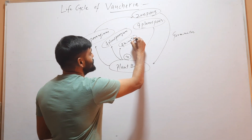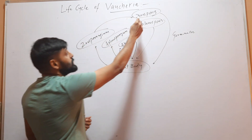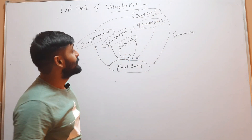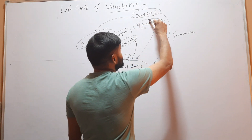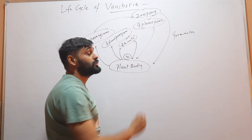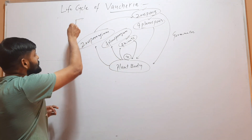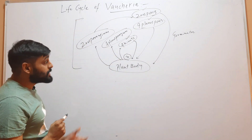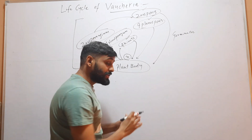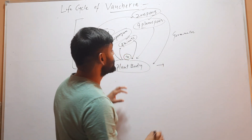The third type of asexual reproduction occurs through akinete formation. These akinetes are thick-walled resting spores formed under unfavorable conditions. Upon return of favorable conditions they germinate and form the plant body. To summarize: zoospores are formed in aquatic species, aplanospores in terrestrial species, and akinetes are formed during unfavorable conditions.